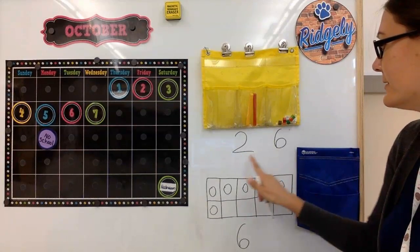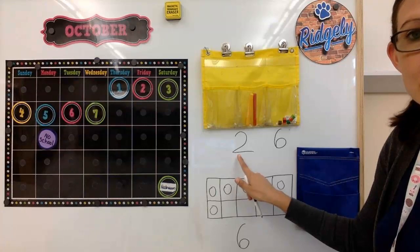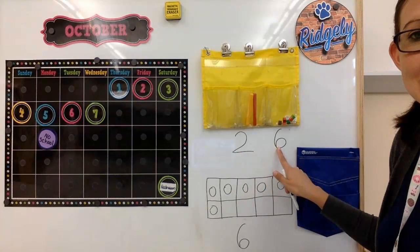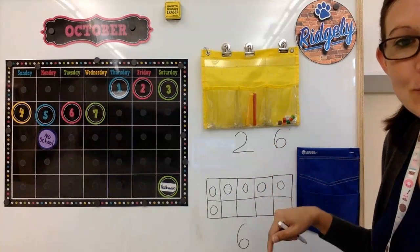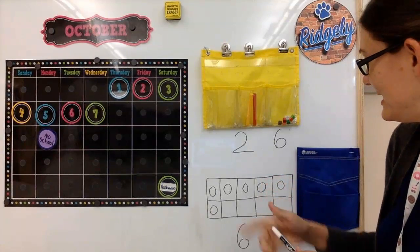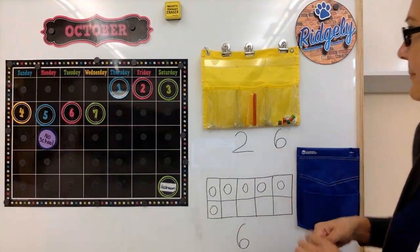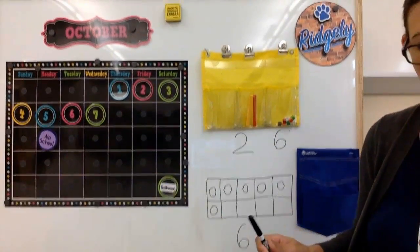So two 10s and six 1s. We read this number as 26. A 2 and a 6 makes 26. So we read it as 26.